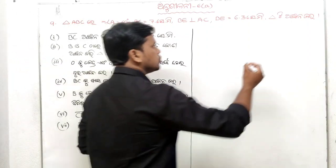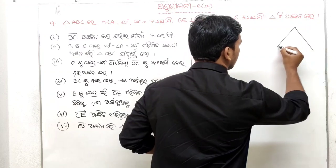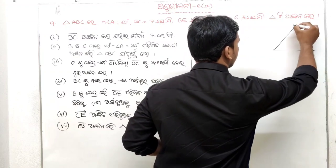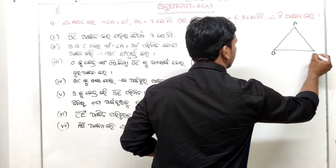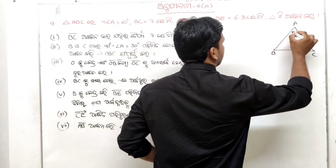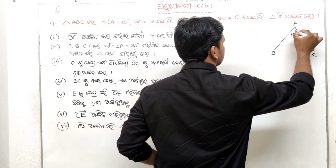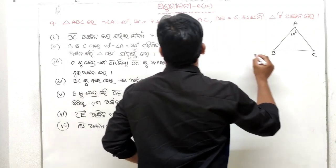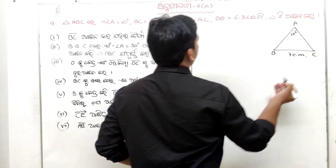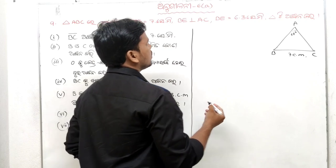So we have triangle ABC. Angle ABC is 60 degrees. BC is 7 cm. And B is perpendicular to A.